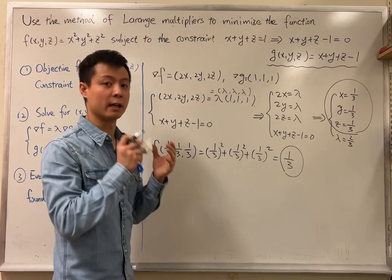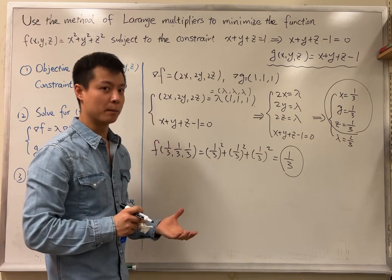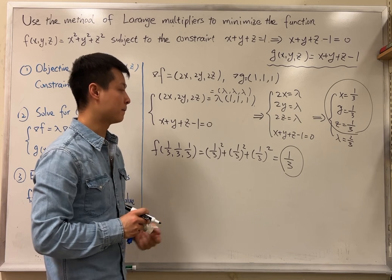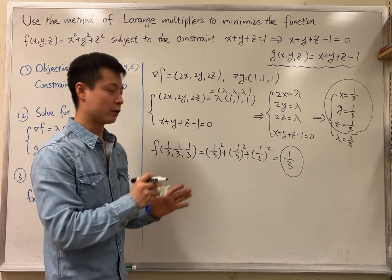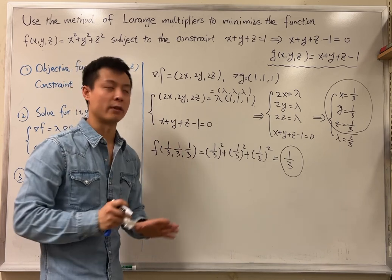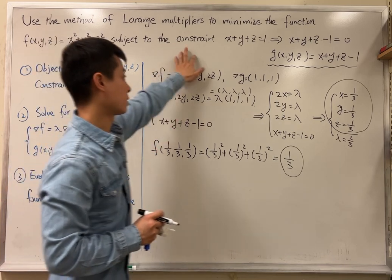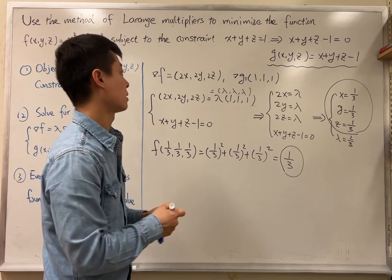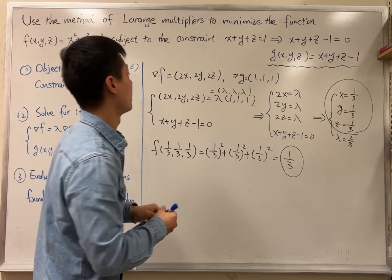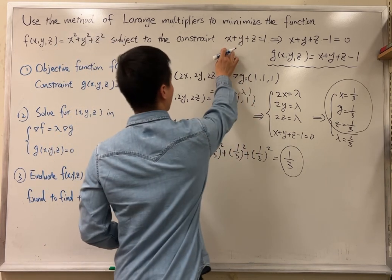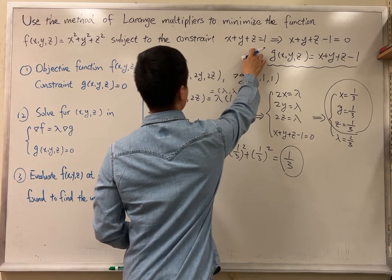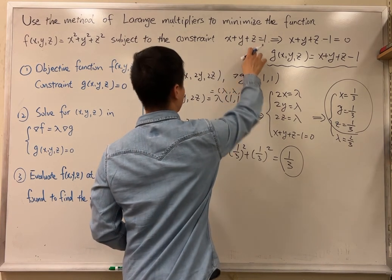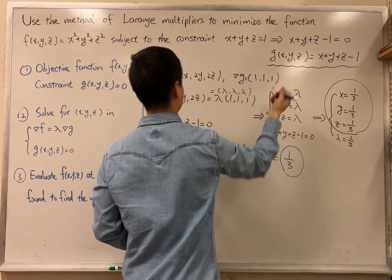And then we evaluate the function at that point to see what output it's going to give us. Just notice this reference point is not any random point that you can choose. It must satisfy the constraint. But we can see there are many points that can satisfy this constraint. For example, I can take the reference point to be (1, 0, 0), or (0, 1, 0), or like other things.